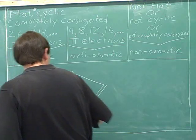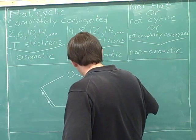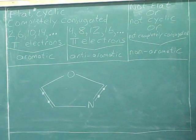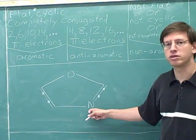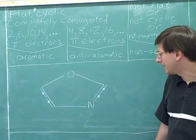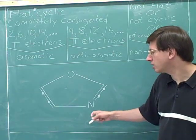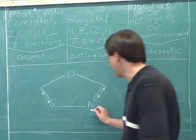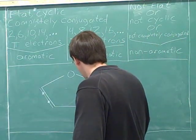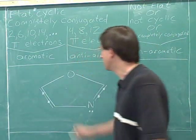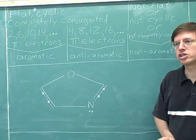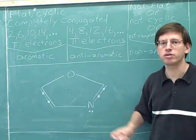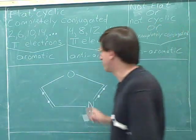There are two electrons in this pi bond and two electrons in this pi bond. Here we have a nitrogen with no formal charge, and even though I haven't shown it, you should know that a nitrogen with no formal charge has a lone pair. Here we have an oxygen with no formal charge, and you should know that an oxygen with no formal charge has two lone pairs.